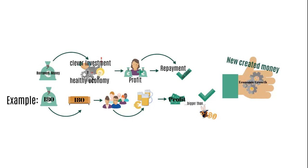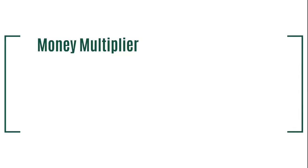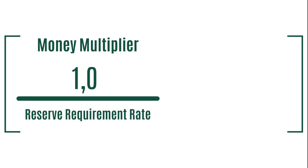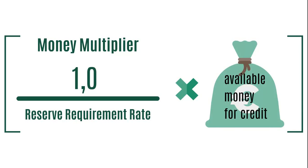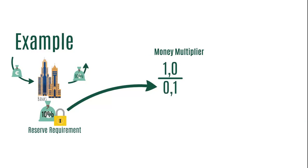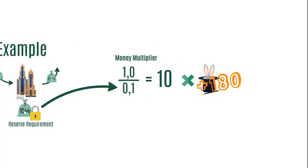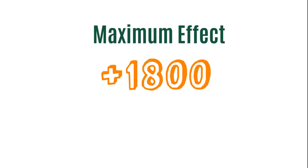But we should still ask: how much money can be created from the initial 200€? The money multiplier is the calculation of the amount of money generated by banks from the reserve requirement. The number 1 must be divided by the reserve requirement rate of the economy, and multiplied by the available money for credit. With a reserve requirement rate of 10%, this results in the number 10, which is multiplied by the initial 180€. In total, at a reserve requirement rate of 10%, 1,800€ may be created out of thin air from 200€ deposited in a bank account.